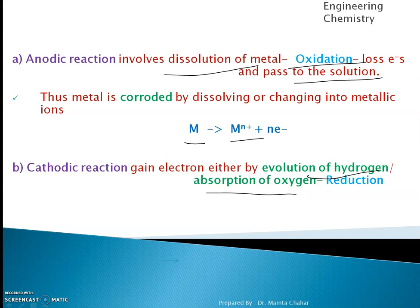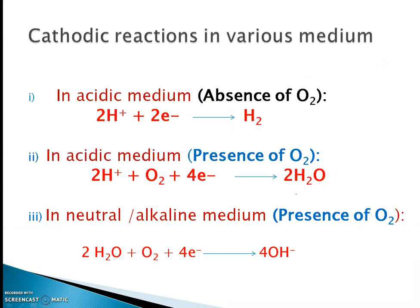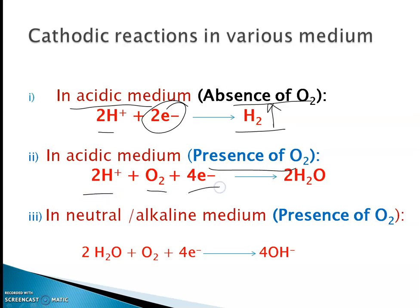For the cathodic reaction there are three possibilities. In an acidic medium, electrons are absorbed by hydrogen ions to produce hydrogen gas. In the presence of oxygen in an acidic medium, electrons are absorbed by oxygen. In a neutral or alkaline medium with oxygen present, electrons are absorbed by oxygen to form hydroxide ions.